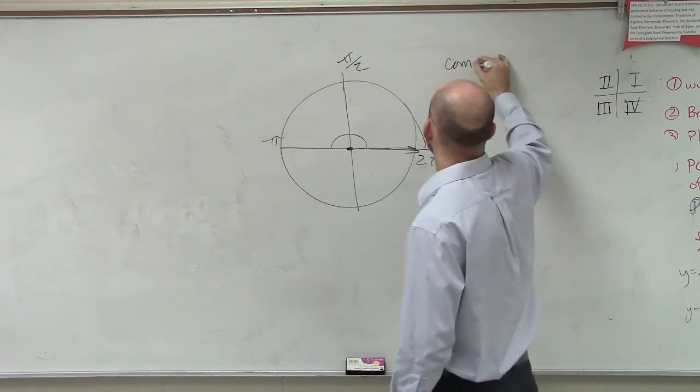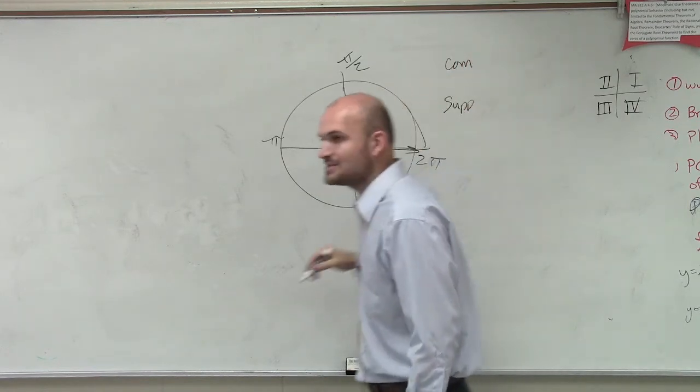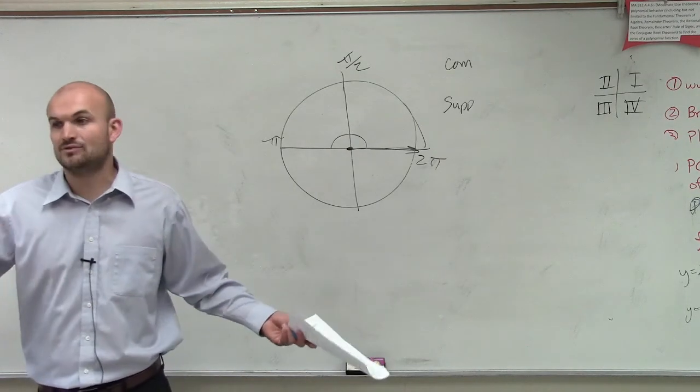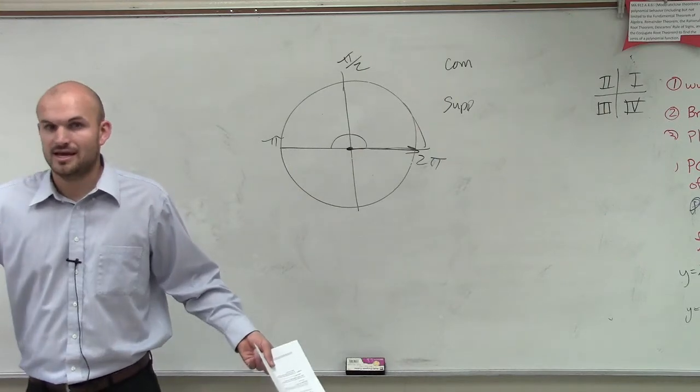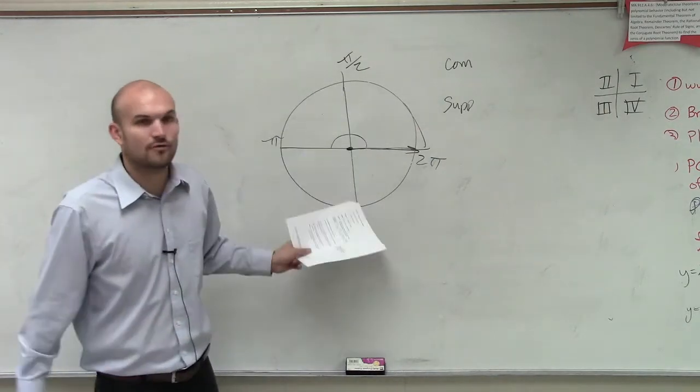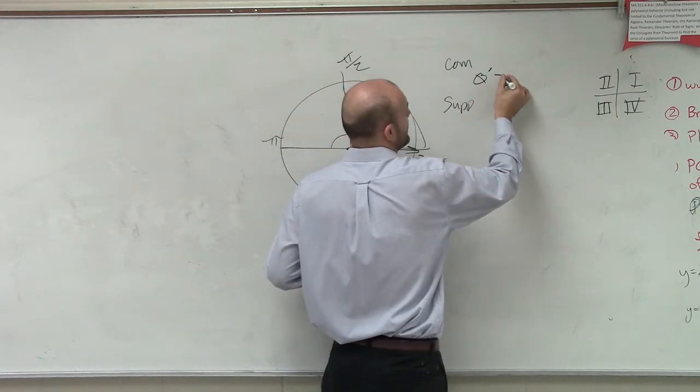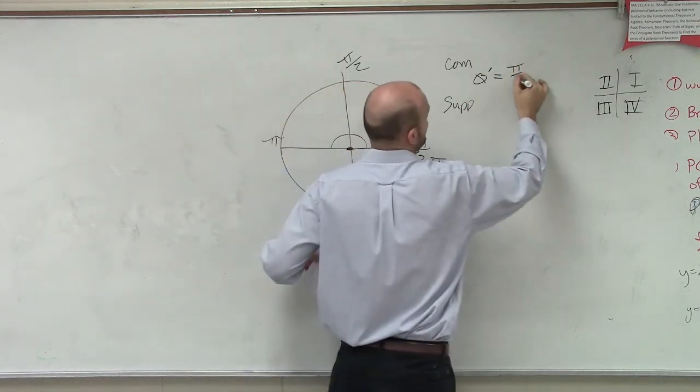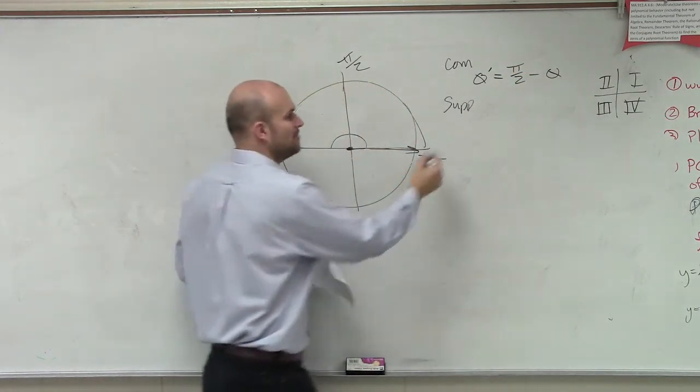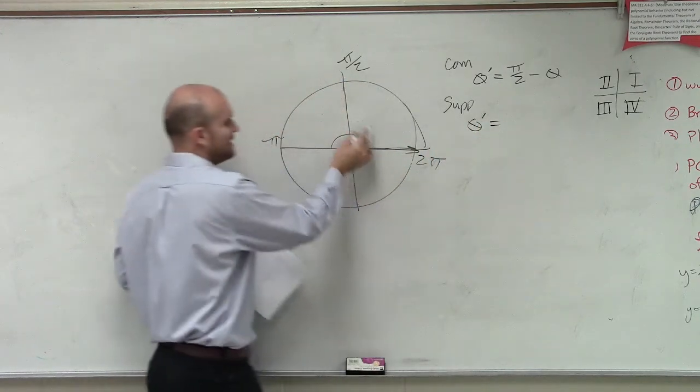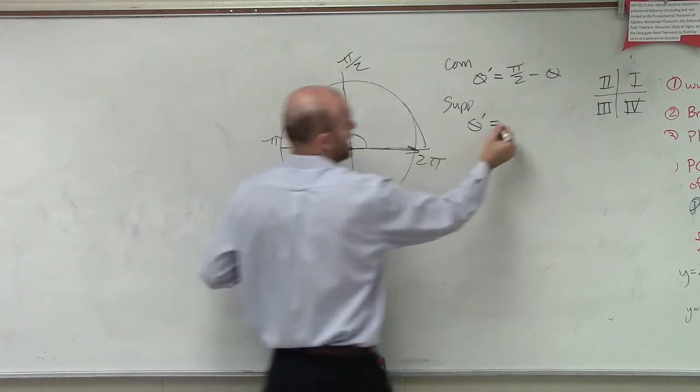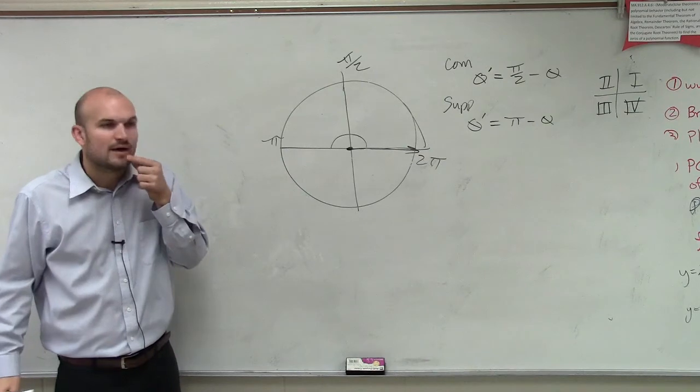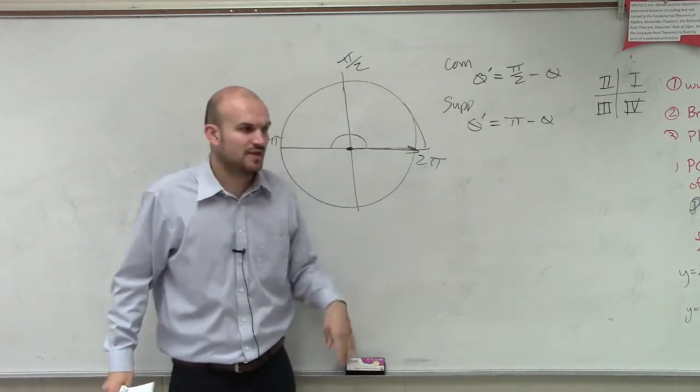So if I was talking about complementary angles or two angles I added up to give you 90, and I said that was theta prime equals 90 minus theta. If I was going to rewrite that for radians, you can now say that's going to be theta prime now doesn't equal 90. But what is the radian measure of 90? Pi over 2 minus theta. And supplementary angles would be theta 2 equals what's 180 equivalent in radians? Pi minus theta. And I'm going to give you guys some examples in a different video for that. So don't worry about that.